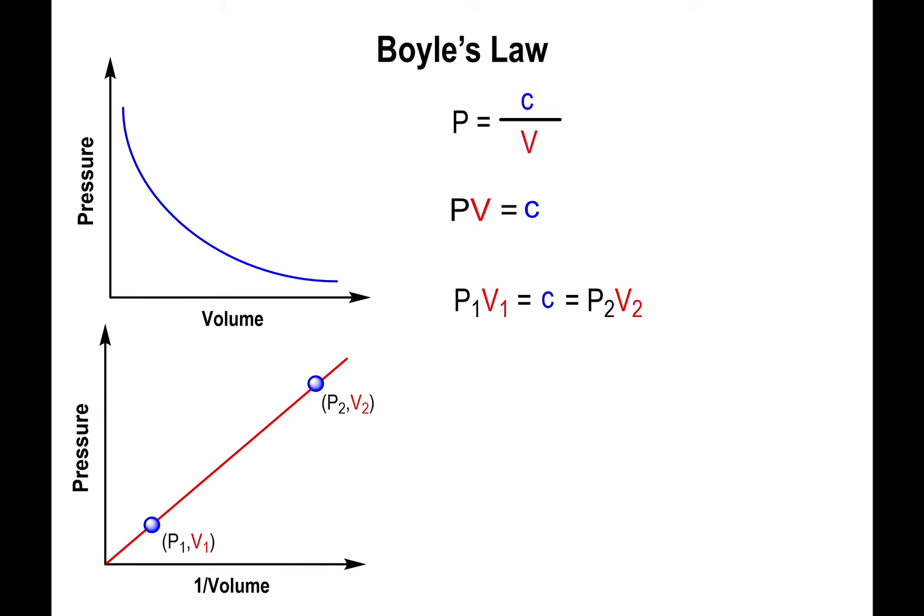You are not constrained to sticking to just that data point. You could use a different data point P2 and V2, and if you multiply P2 times V2, you're guaranteed to get the same slope. This tells you that P1 times V1 must equal P2 times V2. This is what we denominate as Boyle's Law.